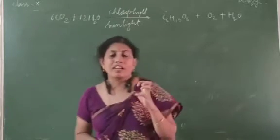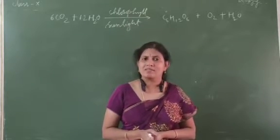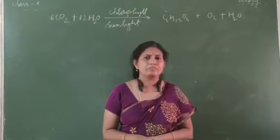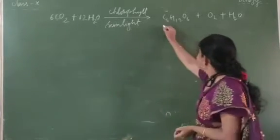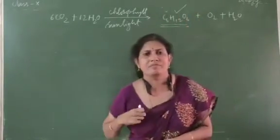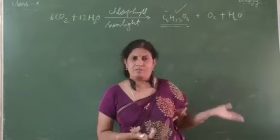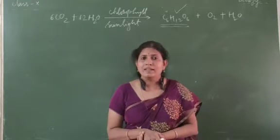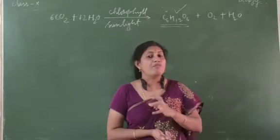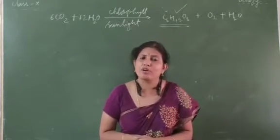So what is the landmark event which confirms that photosynthesis has taken place? Which phenomena will tell us that yes, photosynthesis has taken place? Ultimately glucose or starch should be formed. If starch is formed or if glucose is formed, then we say photosynthesis has taken place. If glucose is not formed, starch is not formed, then it is assumed that there is no photosynthesis which has taken place. So how will we know whether starch has been made by the plant or not?